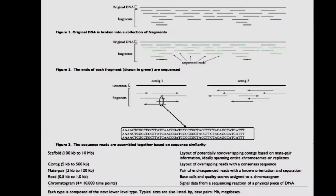There are times where we know that one contig and another contig are spatially related to each other — not only the order of the two contigs with respect to each other, but the orientation. When we know both the order and the orientation, and there's no other sequence available to go in the middle, then we'll make what's called a scaffold. A scaffold is just a layout of the different contigs along the chromosome.